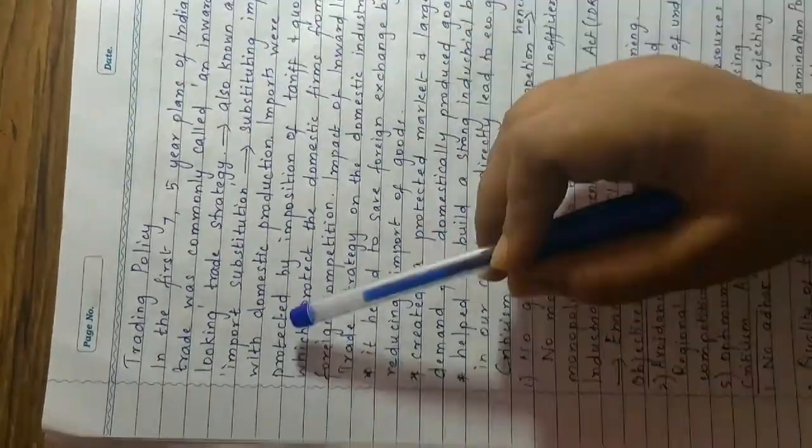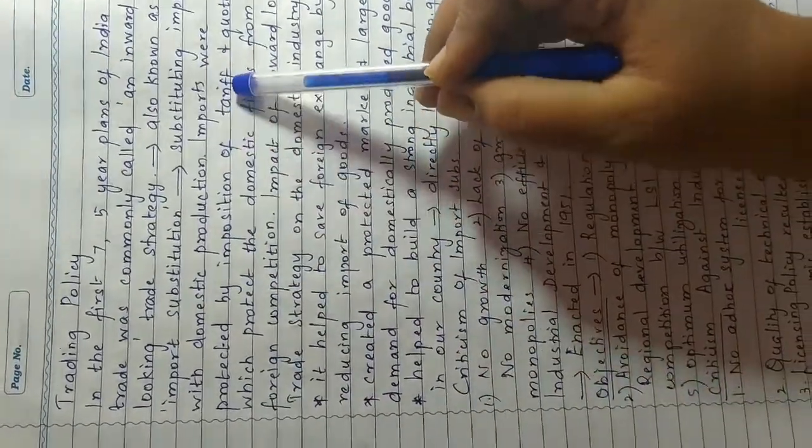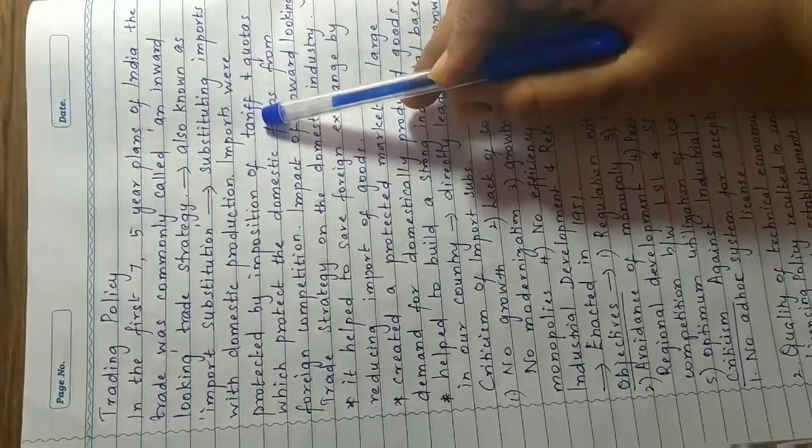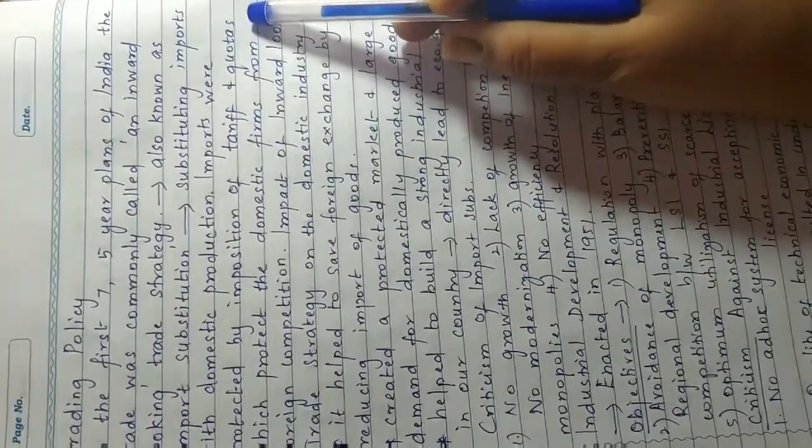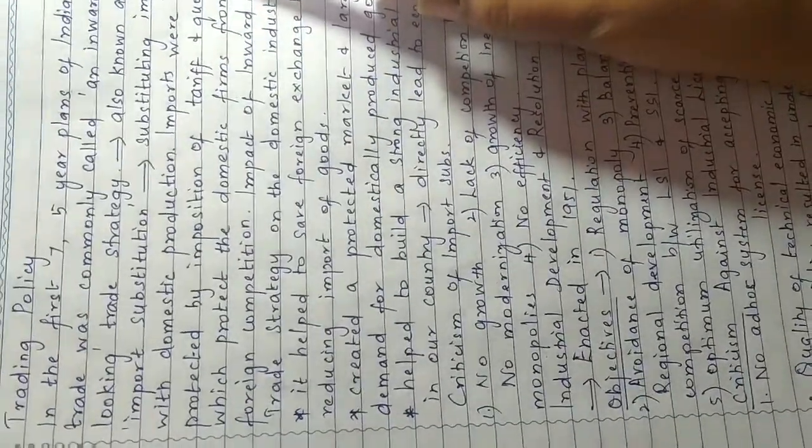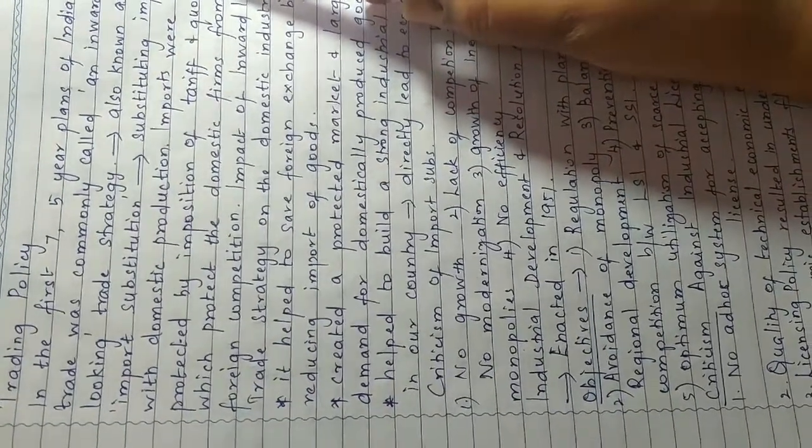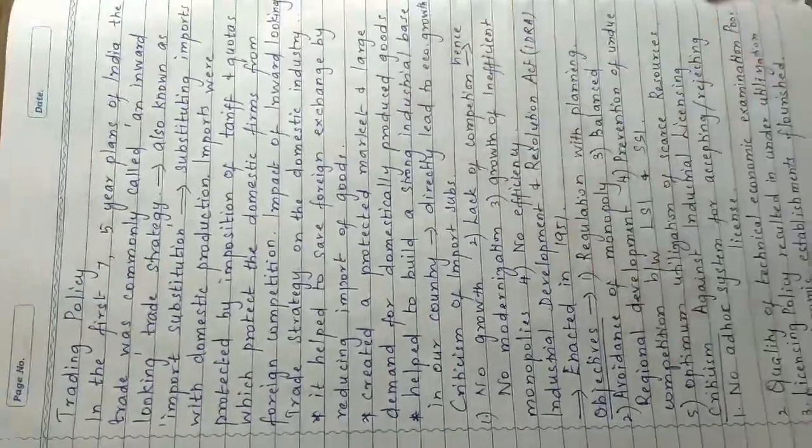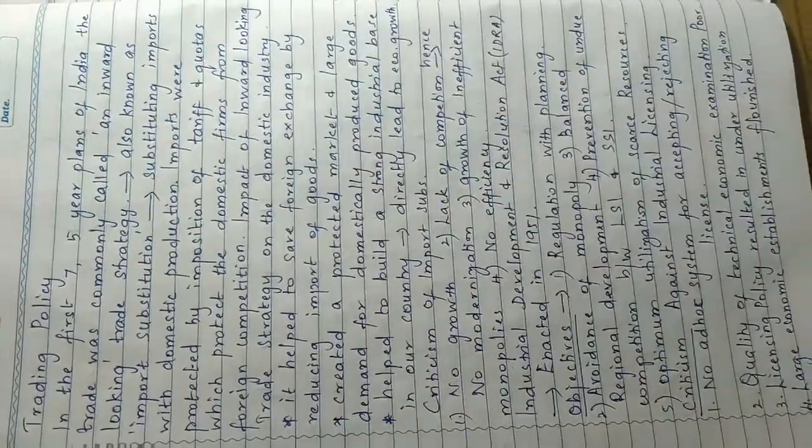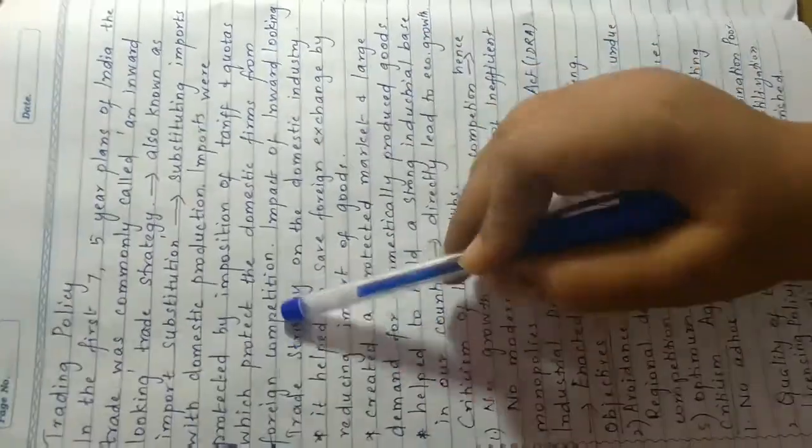Substituting imports with domestic protection. Imports were protected by imposition of tariffs and quotas. There are two types of protection: tariffs and quotas. Tariffs are taxes or duties on imported goods designed to raise the price to the level or above the existing domestic price, and non-tariff barriers which include all other barriers. Quota is a limit to the quantity coming into your country. Tariffs and quotas protect the domestic firms from foreign competition.